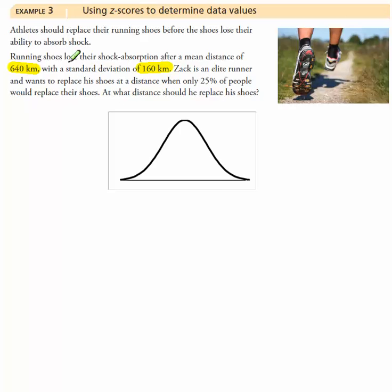And we're told Zach is an elite runner and wants to replace his shoes at a distance when only 25% of people would replace their shoes. What distance should he replace his shoes? So here we're asked to find that distance. We're not given the x value.